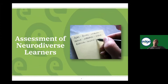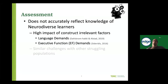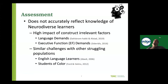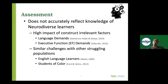Assessment of neurodiverse learners is an area I've been interested in for quite a while, and it's really challenging — not just in STEM, but across the board. Many neurodiverse learners really struggle with traditional assessments because those assessments are often not developed for that student population and rarely tested with them. Traditionally, accommodations are used to try to make these assessments more accessible, but quite a bit of literature shows that accommodations don't always work and certainly don't level the playing field.